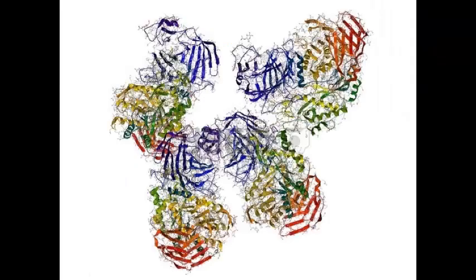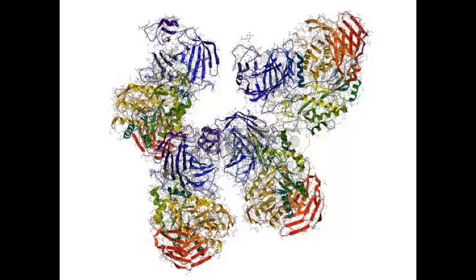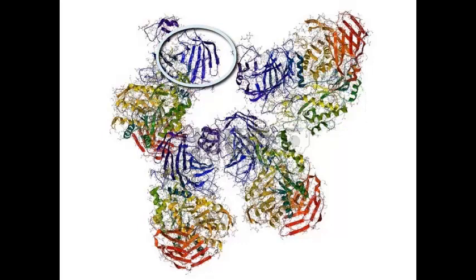Here we see an example of an enzyme. This happens to be sucrase. Enzymes all have a three-dimensional shape that's unique. The shape is critical to their role as biological catalysts. It's a protein, so we can see the alpha helices, the beta pleated sheets, and all the other folding in the molecule that leads to its complex three-dimensional shape.